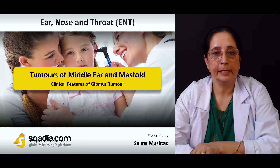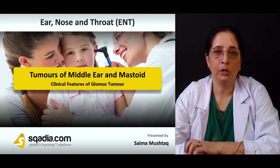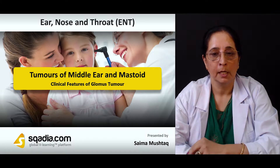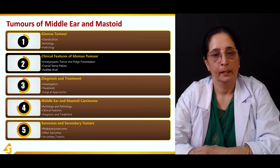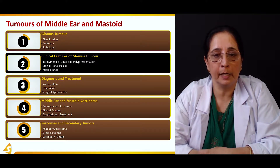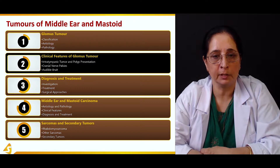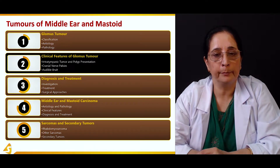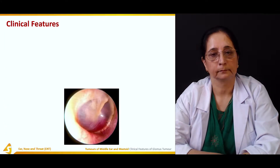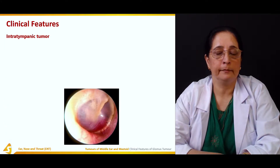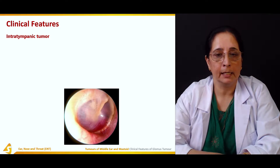In the next section, we will talk about the clinical features of the glomus tumor. We will cover the intratympanic tumor and polyp presentation, cranial nerve palsies, and audible bruit.